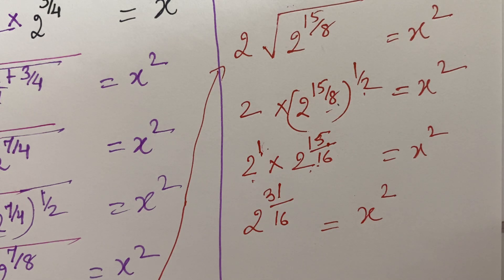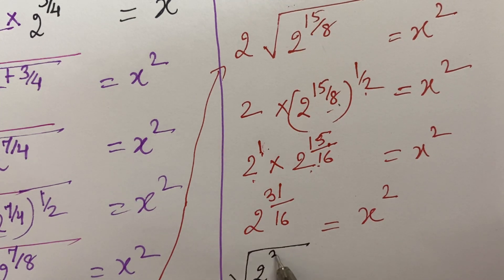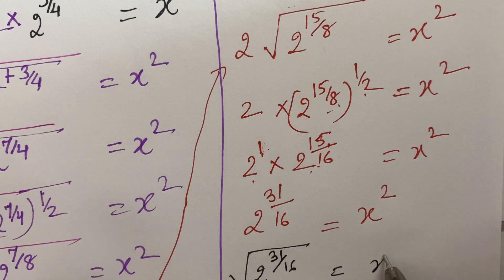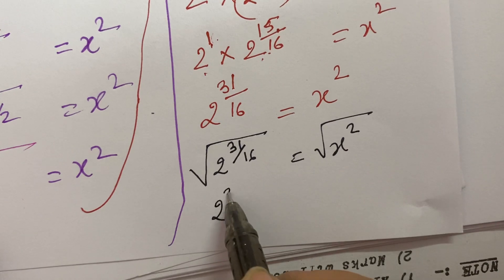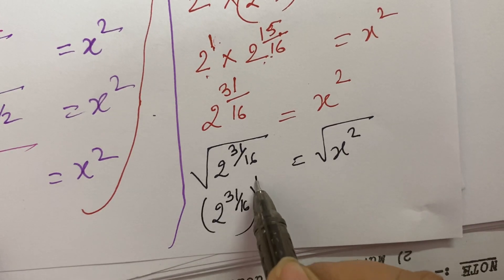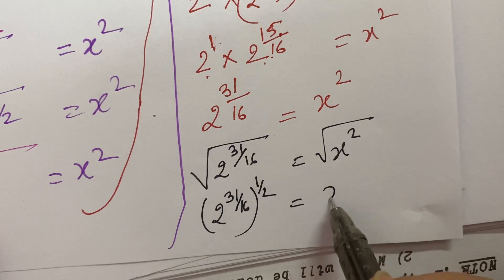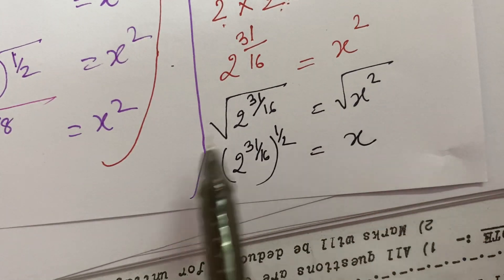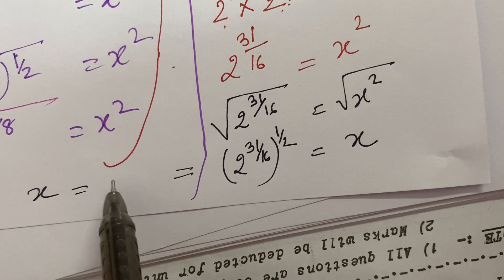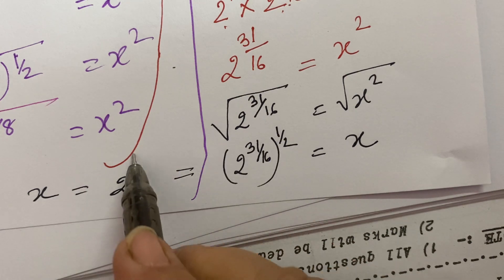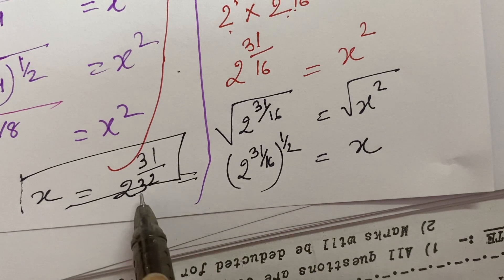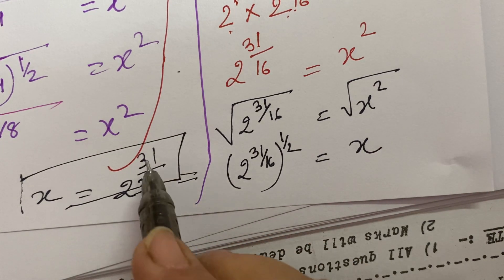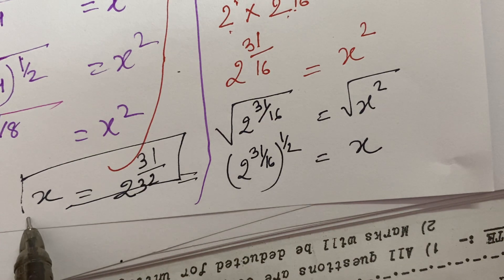Now you need the value of x, so on both sides you take the square root of both sides. Square root of 2 raised to the power 31 upon 16 is equal to square root of x square. So the answer comes out to be 2 raised to the power 31 upon 16, that means raised to the power 1 upon 2. So x is equal to 2 raised to the power 31 — 1's are 31 and 16, 2's are 32 — so the value of x is 2 raised to the power 31 upon 32.